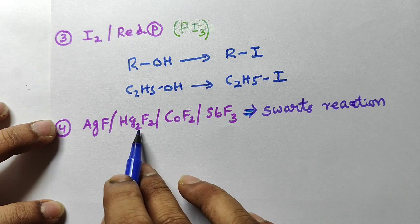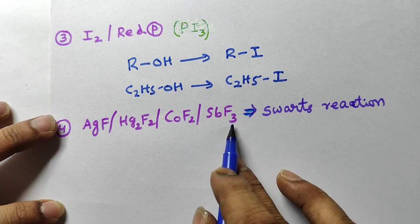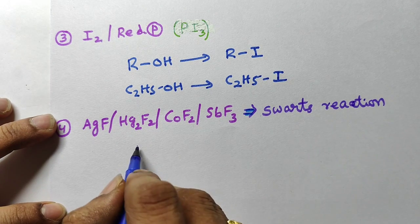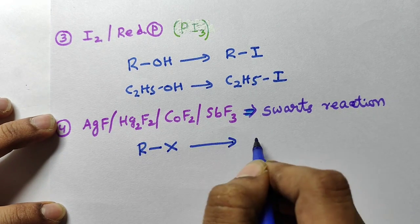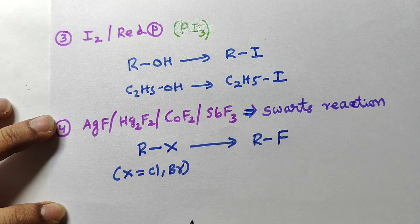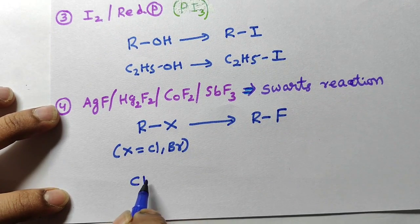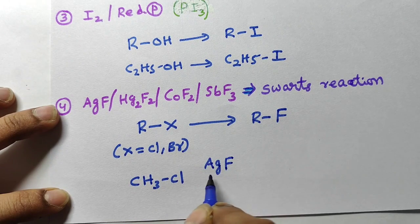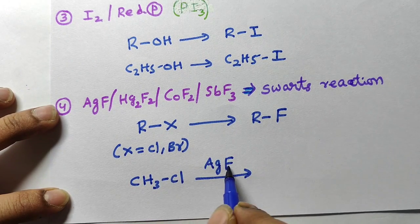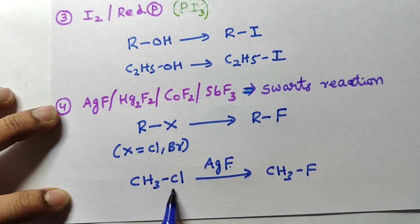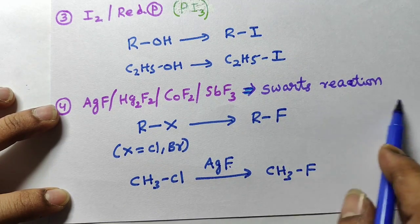Fourth reagent: AgF and SbF2F2 — all these reagents are fluorinating agents. This reaction is called the Swartz reaction. In this reaction, alkyl halide is converted into alkyl fluoride, where the halogen is either chlorine or bromine. For example, CH3Cl treated with AgF: chlorine is replaced by fluorine to give CH3F. Methyl chloride is converted into methyl fluoride. This is the Swartz reaction — an important named reaction.